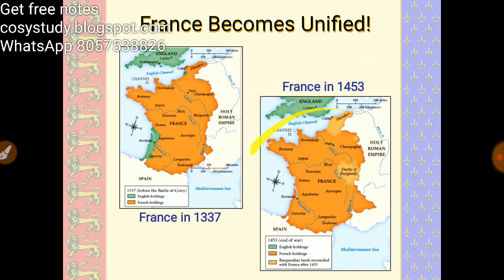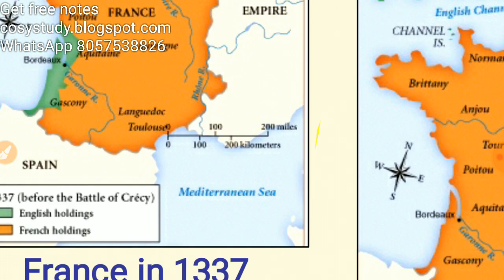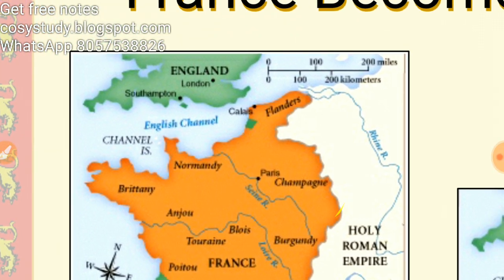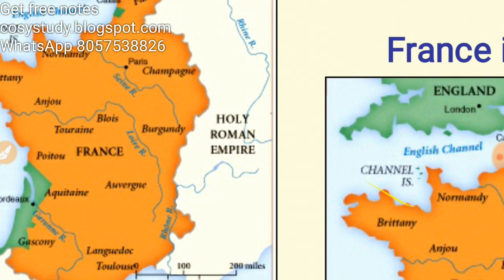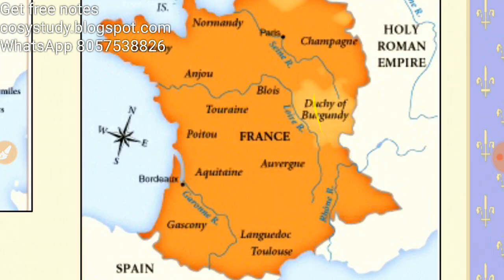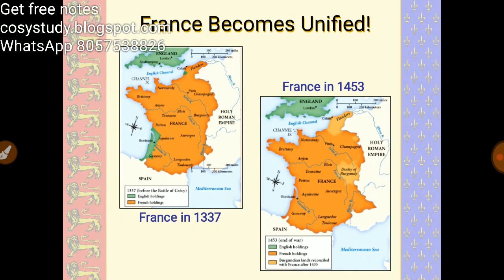Here is the final result shown on the map. You can see France unified by the end of the war. In 1337, England held significant French territory, including Calais. By 1453, after the war, virtually nothing remained in British hands and France was now unified. Thank you for watching — good luck for your exam, don't forget to share and like the video.